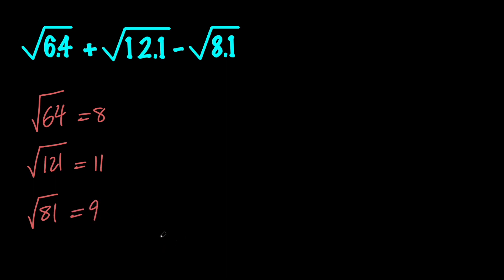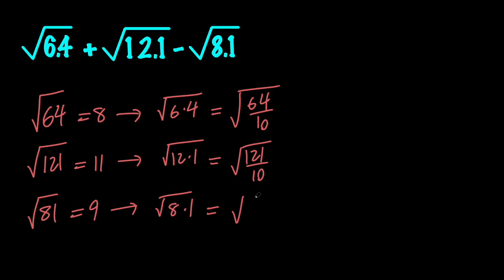But we don't want to evaluate these. We want to evaluate the square root of 6.4, the square root of 12.1, and the square root of 8.1. To do that, we've got to replace 6.4 with 64 over 10, and replace 12.1 with 121 over 10, and replace 8.1 with 81 over 10.